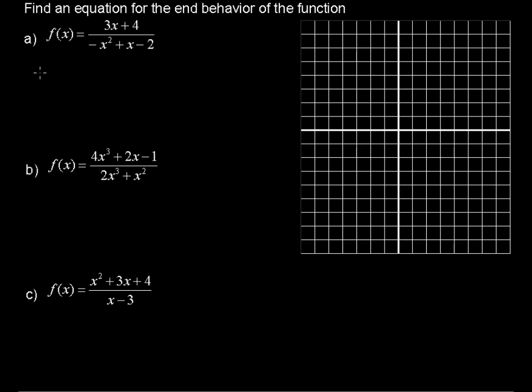Find an equation for the end behavior of the function. We have a few functions here. They're all rational functions. The first one is f(x) equals 3x plus 4 over negative x squared plus x minus 2.